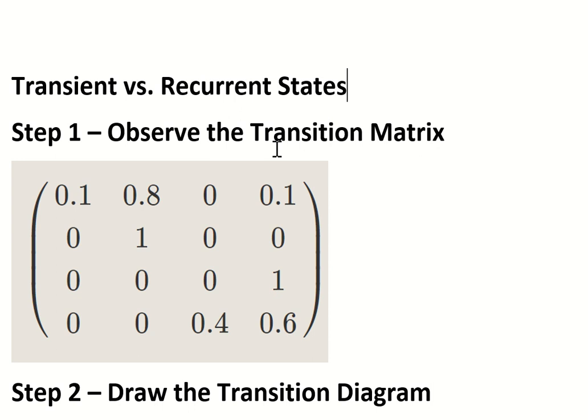The first thing you want to do is draw the transition diagram from this transition matrix. Let's say it's A, B, C, D states on this side, and then of course A, B, C, D states across that way.